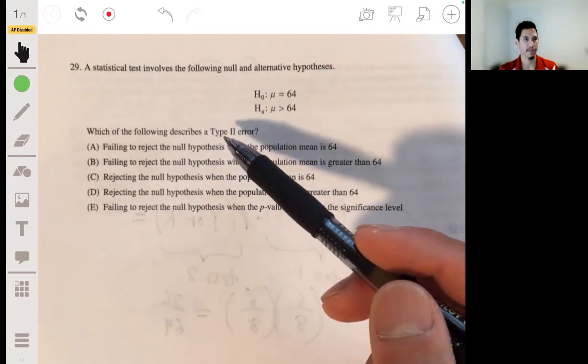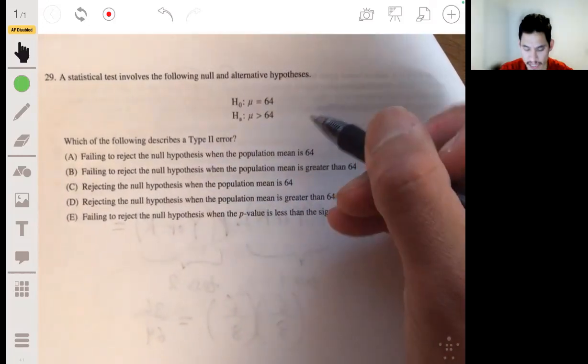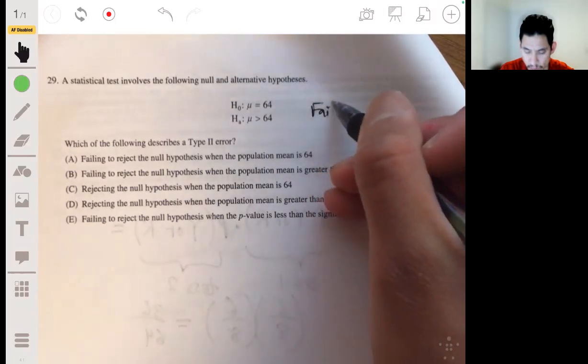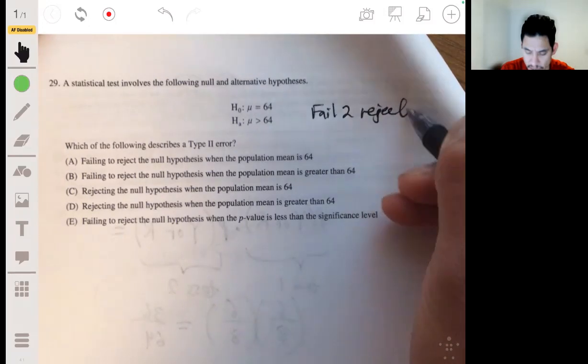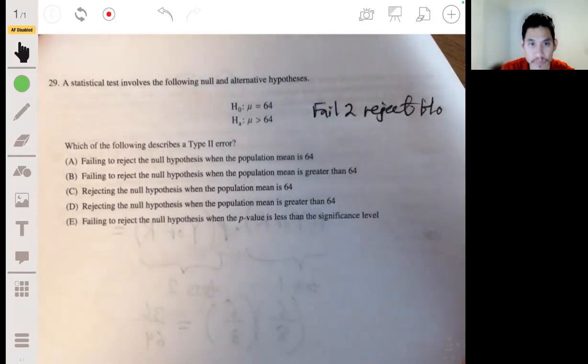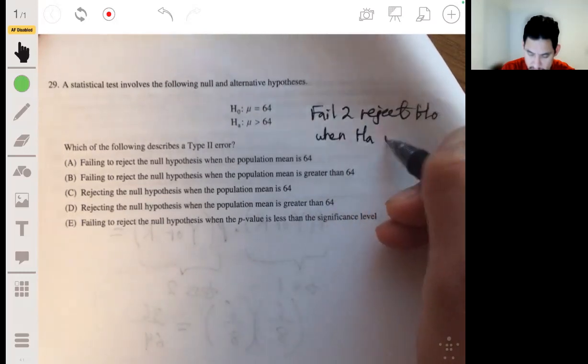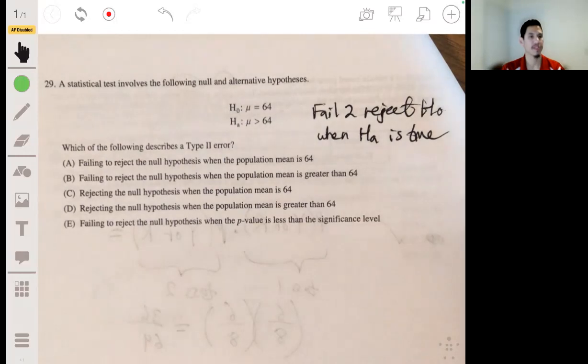So what describes the Type II error? Let's remember what a Type II error is. That's when we fail to reject the null hypothesis, fail to reject H0 when the alternative, when HA is true.